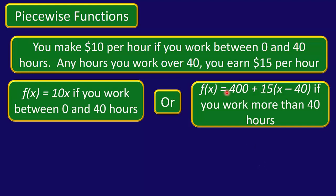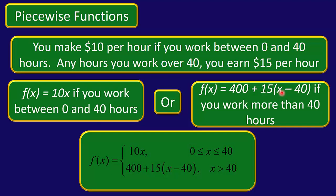So things change after you work 40 hours — the rule changes a little bit. You have f of x equals 10x if you work between 0 and 40 hours. Or if you work more than 40 hours, the rule is 400 plus 15 times (x minus 40). The $400 comes from the $400 you made working 40 hours — 10 times 40. Then every hour over 40 you get $15. So for example, if you work 42 hours, you'd have 400 plus 15 times 2 for the two hours above 40. This is called a piecewise function because the rule changes once you work more than 40 hours.